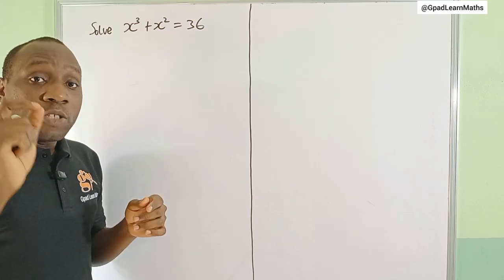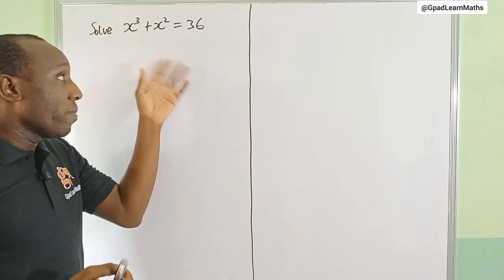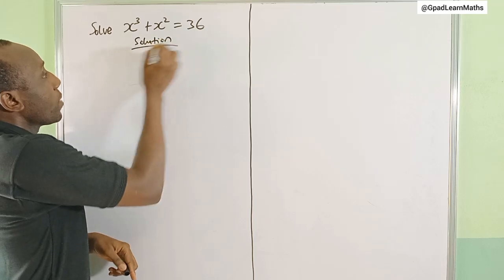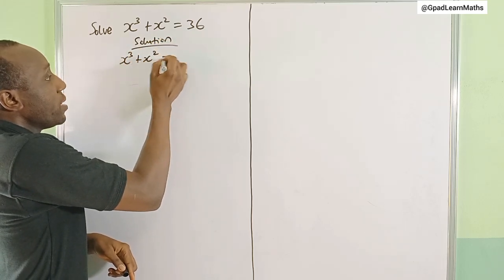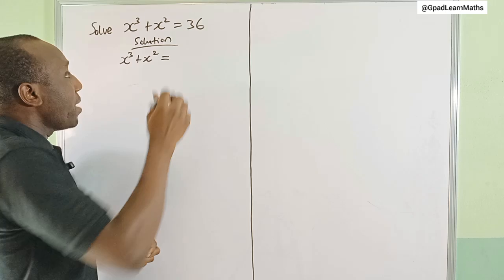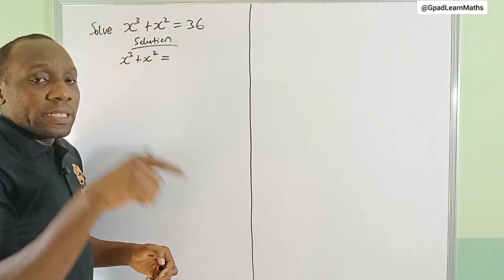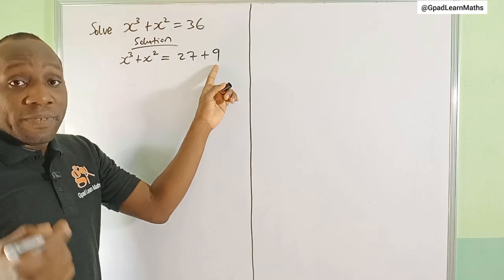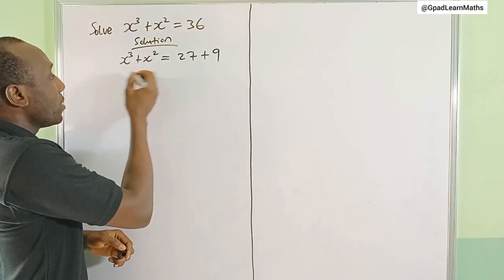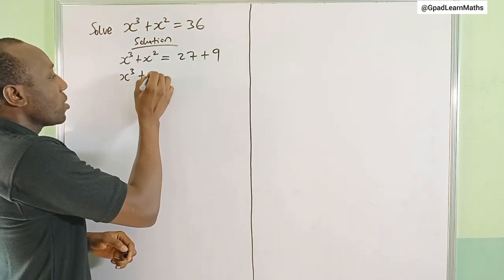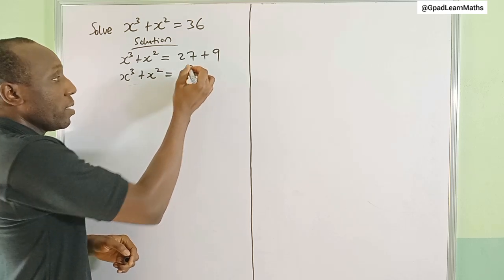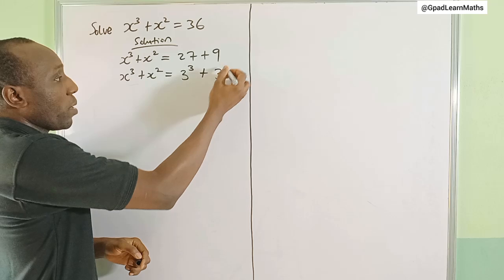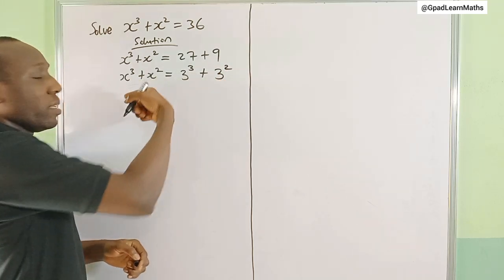So x³ + x² equals, I can write 36 as 27 + 9. 27 is a perfect cube, 9 is a perfect square. So x³ + x² = 3³ + 3². Let's bring this to the left-hand side to meet x here. That's x³ - 3³ plus x² - 3² which is equal to 0.